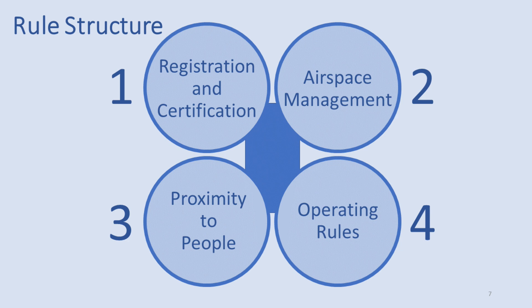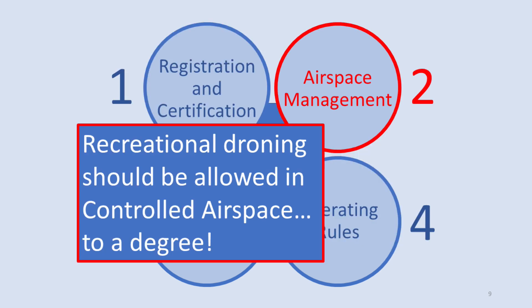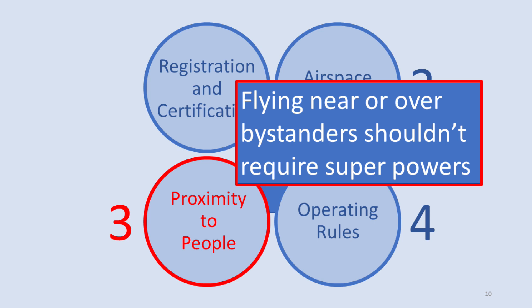I have follow-up videos in this series going into each of these areas in detail, but for now let me give you a peek at what's going on inside my head. In the registration and certification area, I'll explain why I think remote ID is actually a good idea — just not in the way the American FAA is proposing it. Under airspace management, I'm proposing that recreational droning should be allowed in controlled airspace. I think that was the sound of an air traffic controller falling out of her chair — don't worry, there's method to my madness. Proximity to people: I really think this is overly regulated and shouldn't require superpowers or parachutes on your drone.